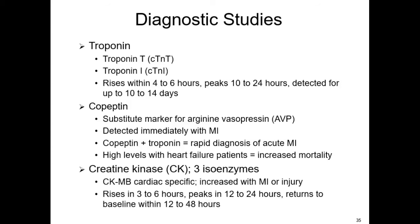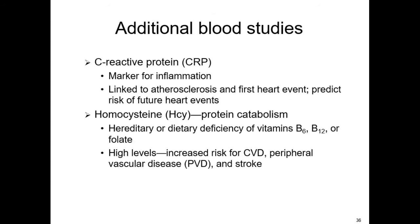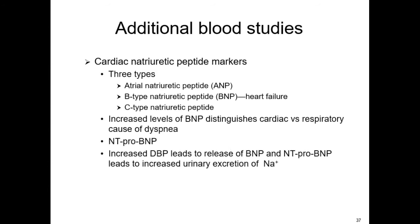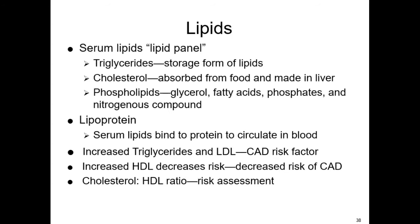Homocysteine levels and CRP give us increased risk of cardiovascular disease. Other blood studies include peptide markers for heart failure — BNP is specific for heart failure. For cardiac workups, we also look at the lipid panel: triglycerides, cholesterol, phospholipids, and lipoproteins. Review the normals and the difference between HDL and LDL. Higher HDL decreases cardiovascular risk, and we want lower LDL.